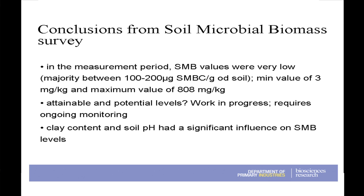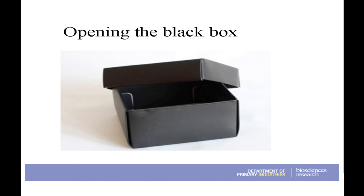Conclusions from the microbial biomass survey: soil microbial biomass values were quite low in our systems, but when you consider we've come out of a ten-year period of drought with not a lot of plant biomass going in, maybe that's the reason. The question we've got to ask is what are our attainable and potential levels — this is a work in progress. Microbial biomass is your classic black box. What we're doing now with our molecular methods is trying to open that black box and look a little bit deeper into the estimated 15,000 species present in a gram of soil.